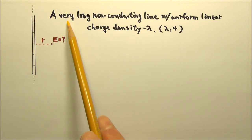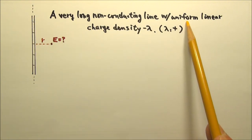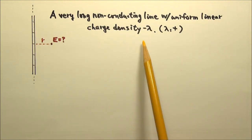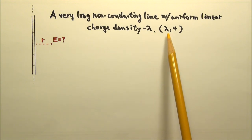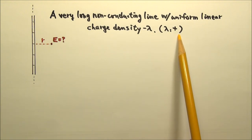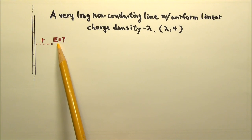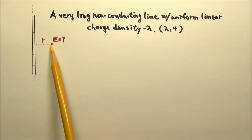Here we have a very long non-conducting line with uniform linear charge density negative lambda, where lambda is positive. Find the electric field produced by this line of charge a distance r away.